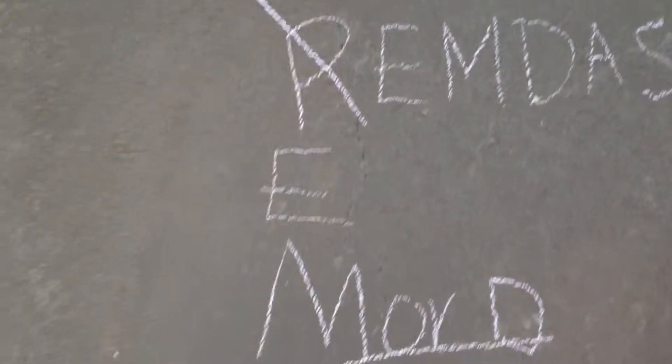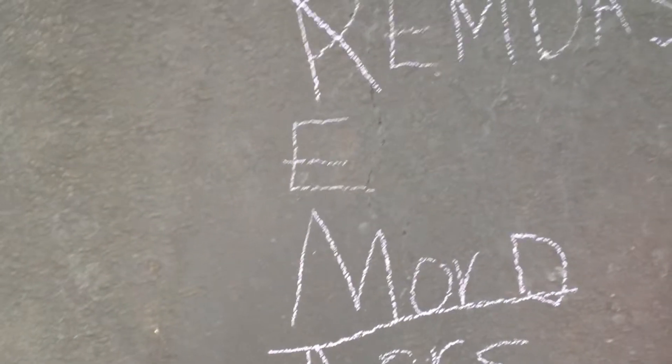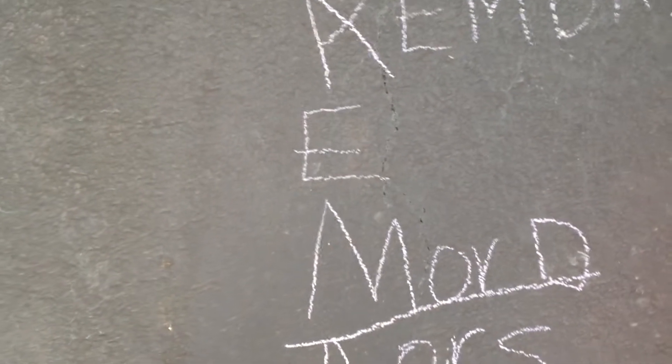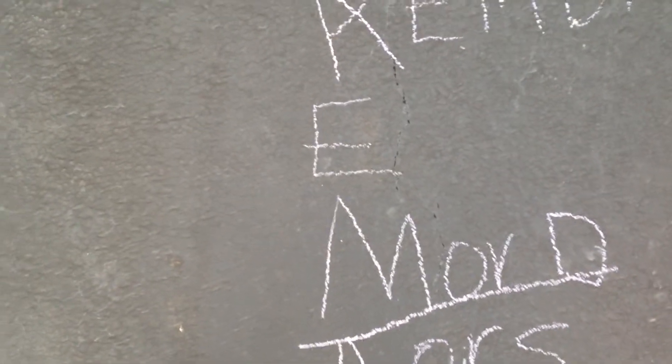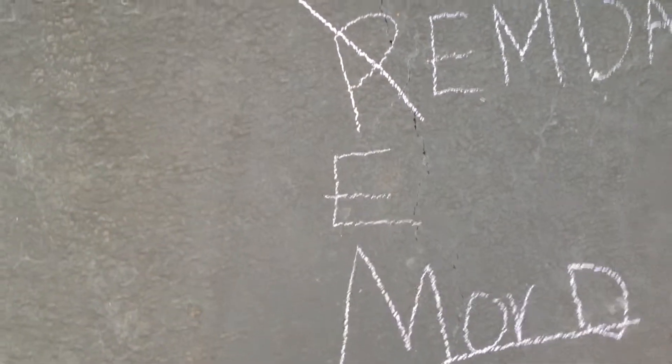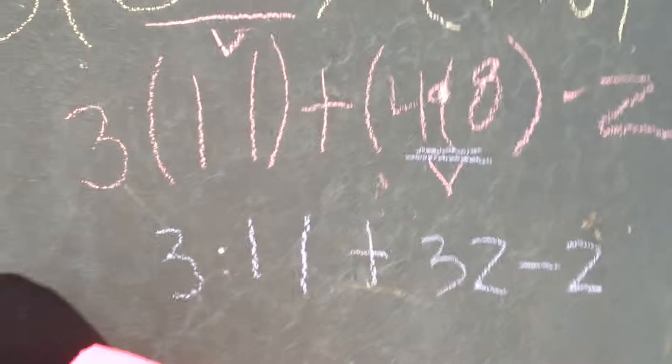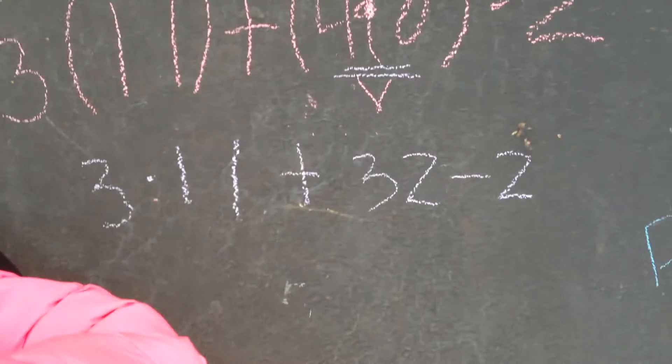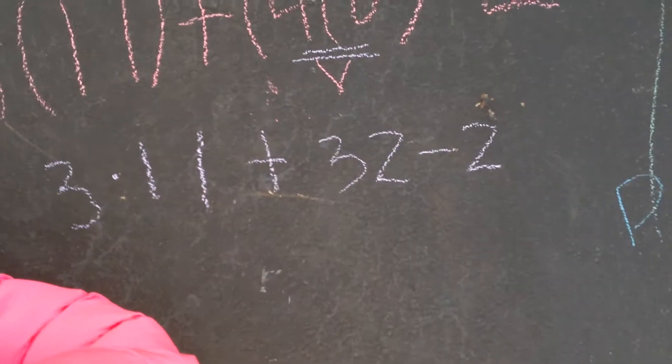The next thing on our list is E, and that stands for exponents. We're going to see if we have any exponents. We don't have any exponents, so we're going to go ahead and cross that off the list.